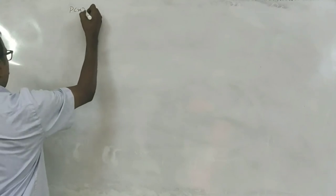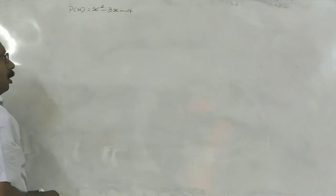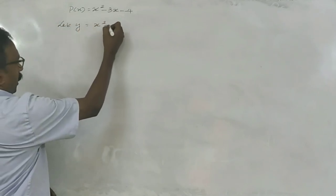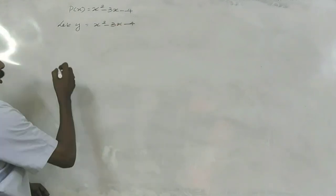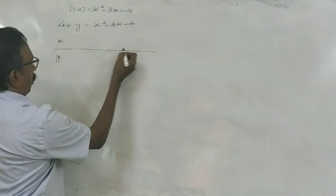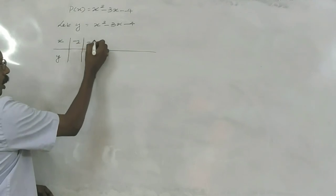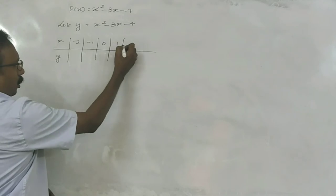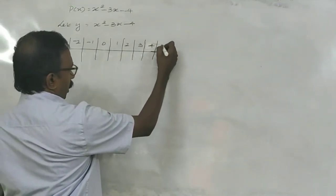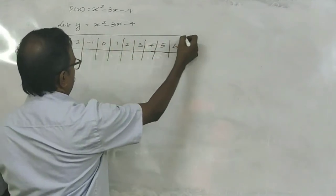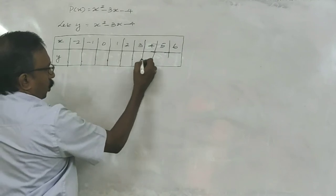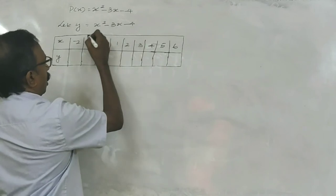The polynomial is P(x) = x² − 3x − 4. To draw the graph of this polynomial, let us take y = x² − 3x − 4. We will compute some values. Let us take x-values: minus 2, minus 1, 0, 1, 2, 3, 4, 5. We need to find the corresponding y-coordinates.